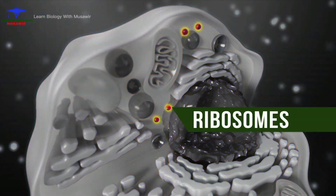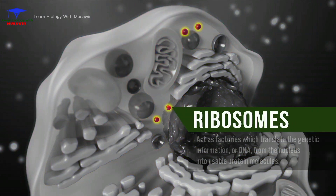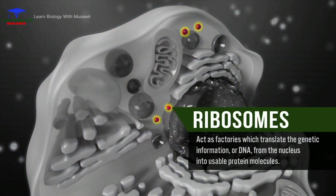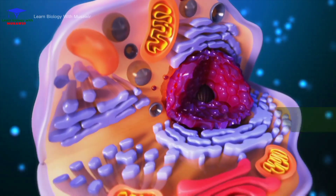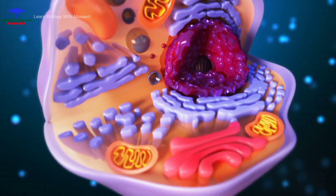Ribosomes act as factories, which translate the genetic information or DNA from the nucleus into usable protein molecules. Proteins do the work in the cell.